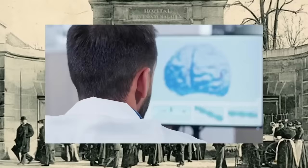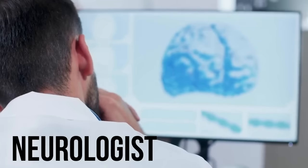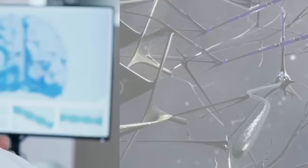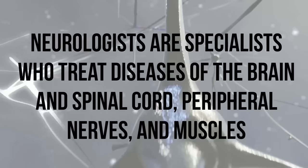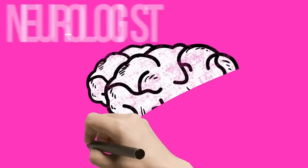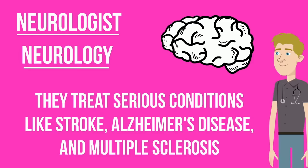Let's move on to our next type of doctor: a neurologist. Neurologists are specialists who treat diseases of the brain and spinal cord, peripheral nerves and muscles. The field is called neurology. Neurologists treat serious conditions like stroke, Alzheimer's disease and multiple sclerosis.